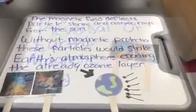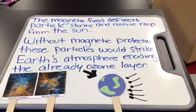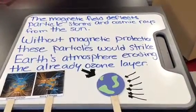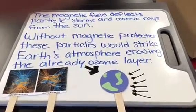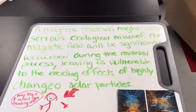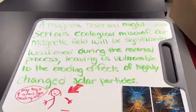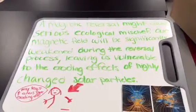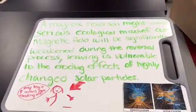The magnetic field deflects particles, storms, and cosmic rays from the sun. Without magnetic protection, these particles would strike Earth's atmosphere, eroding the ozone layer. A magnetic reversal might cause serious ecological mischief. Our magnetic field will be significantly weakened during the reversal process, leaving us vulnerable to the eroding effects of highly charged solar particles.